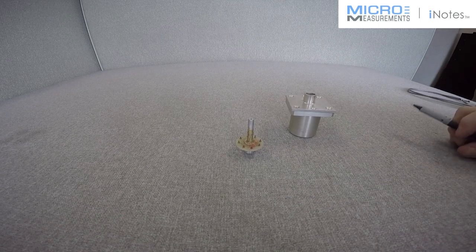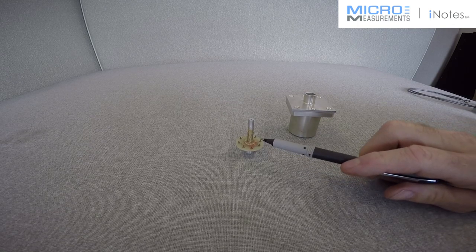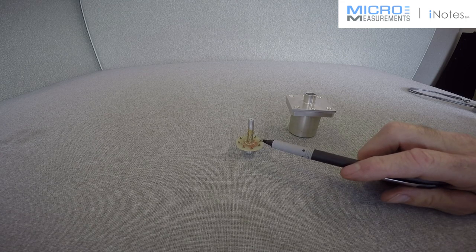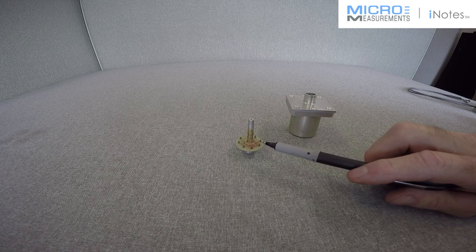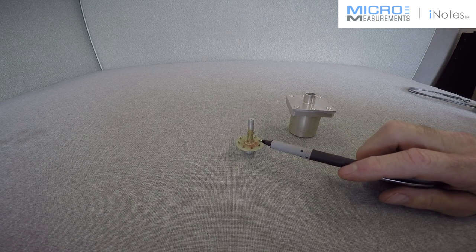A couple problems we ran into was putting eight gauges around such a small diameter left very small solder tabs which were very delicate and extremely hard to work with. There was a lot of rework in the production gauging because of the tight quarters on this.